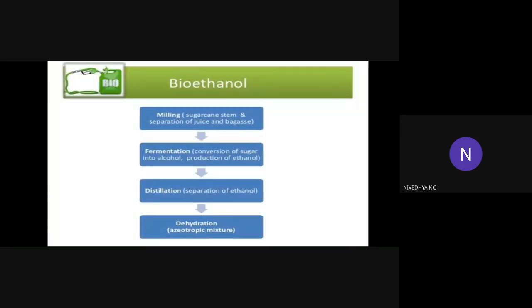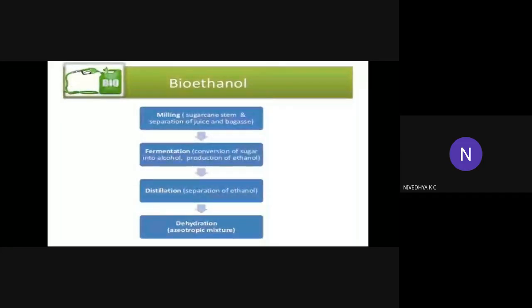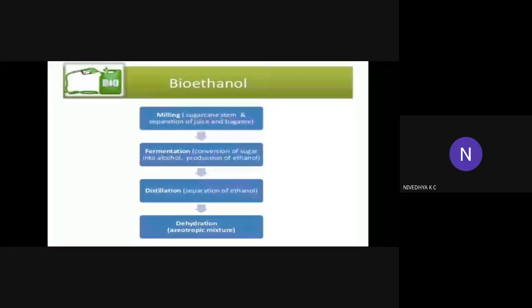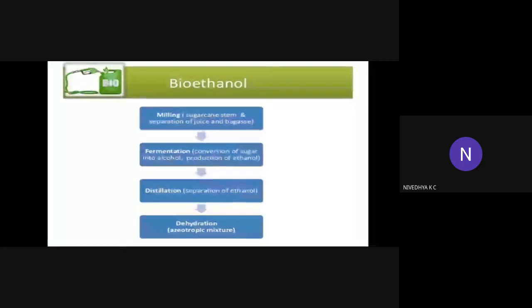From the third stage, distillation, ethanol is separated. Last stage is dehydration — separate water contents from ethanol. Four stages are: milling (sugarcane stem separation of juice and bagasse), fermentation (conversion of sugar into alcohol), distillation (separation of ethanol), and dehydration (separating water contents from ethanol).